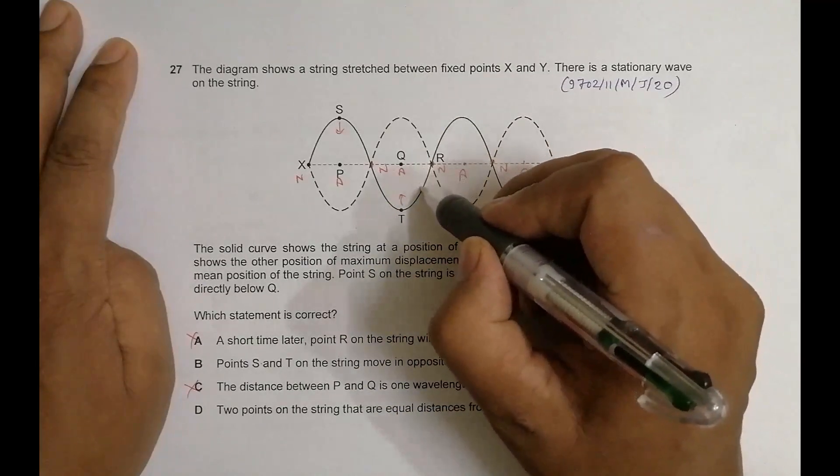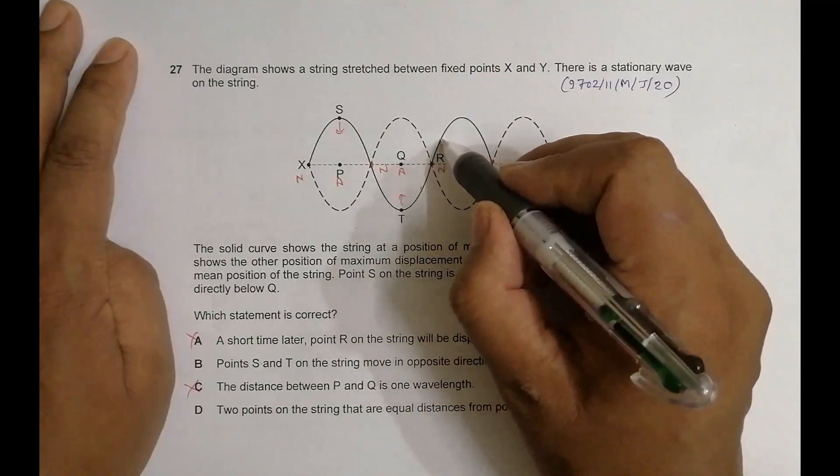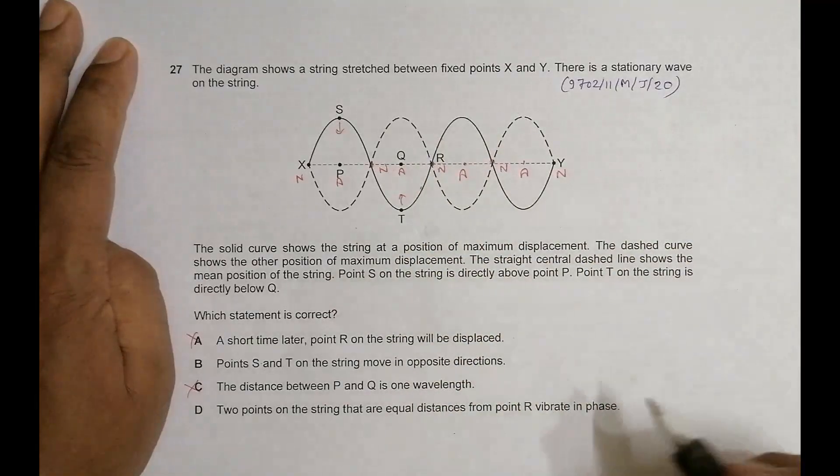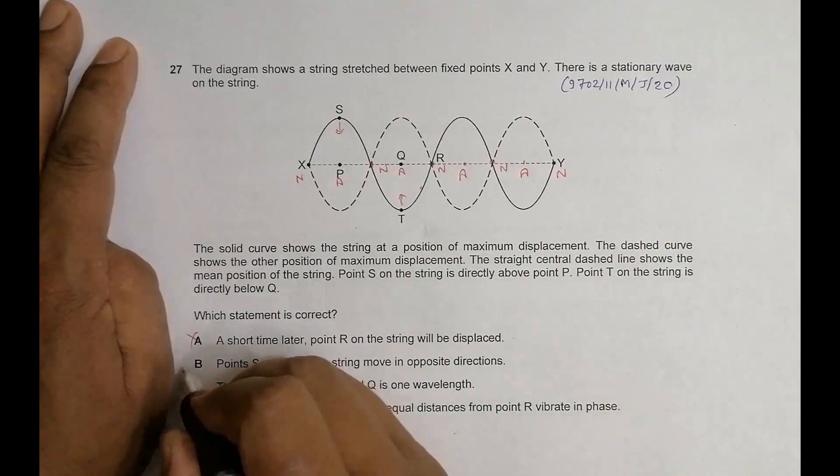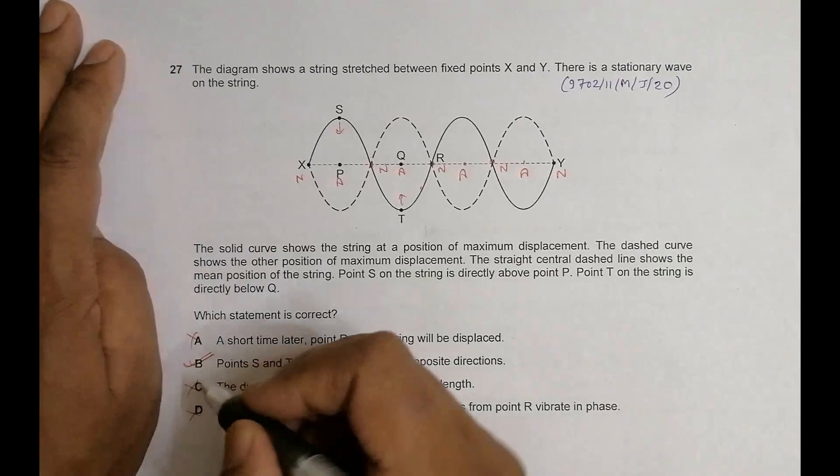Even if I go through this point, these two are exactly out of phase. So they should vibrate out of phase, not in phase. So that's why this is also untrue. The correct choice is choice number B only.